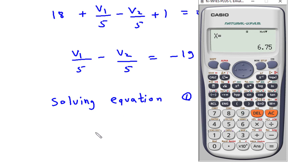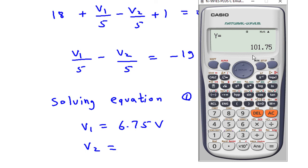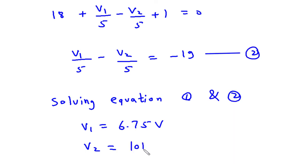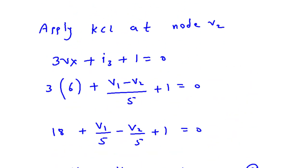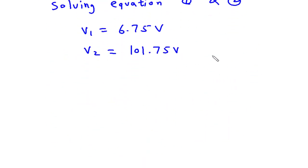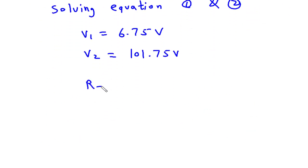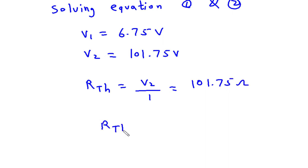Solving the system gives V1 equal to 6.75 volts and V2 equal to 101.75 volts. We have to find the value of V2, so V2 equals 101.75. Since Rth equals V2 by 1, therefore Rth is equal to 101.75 ohms.